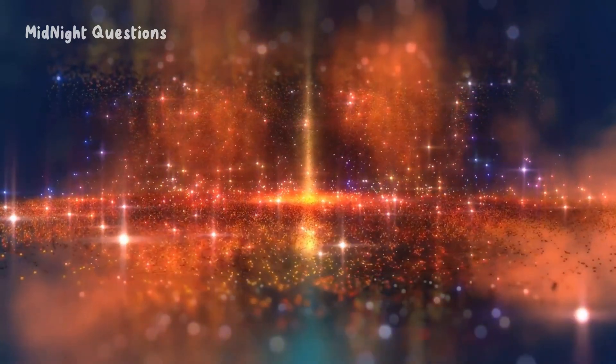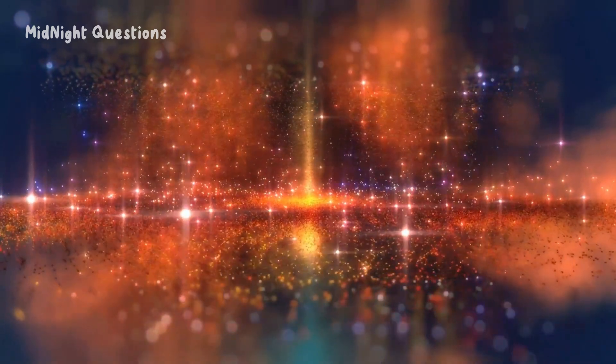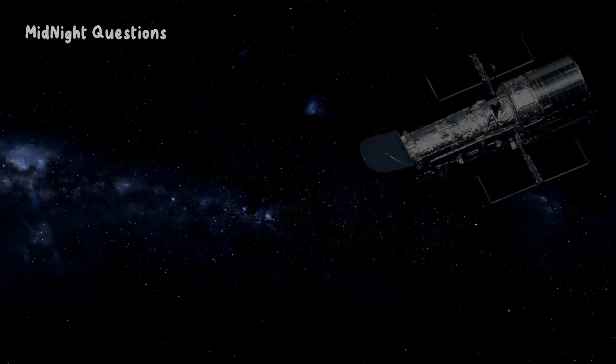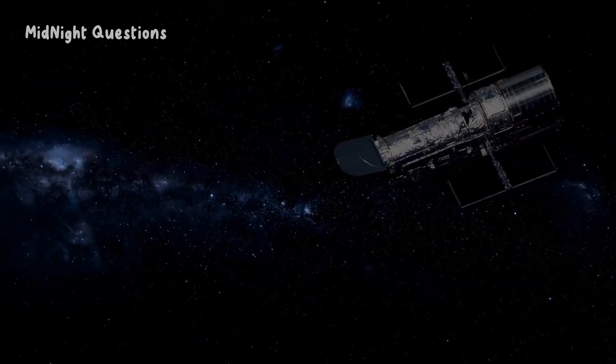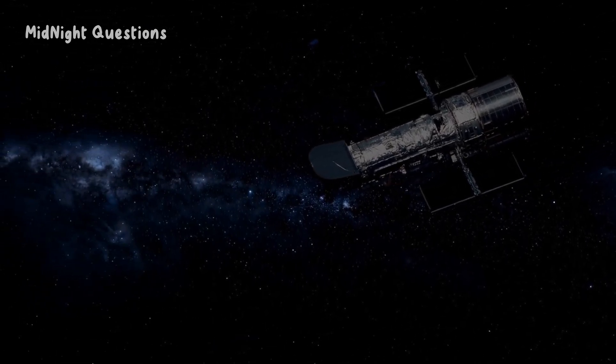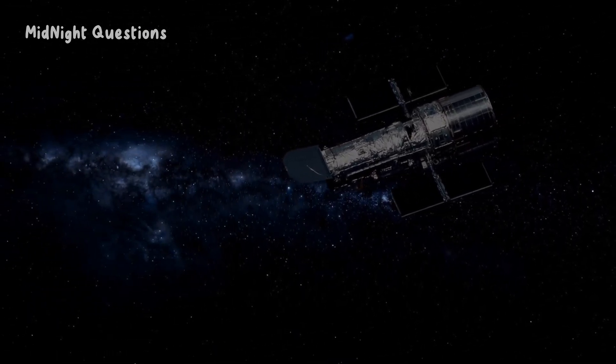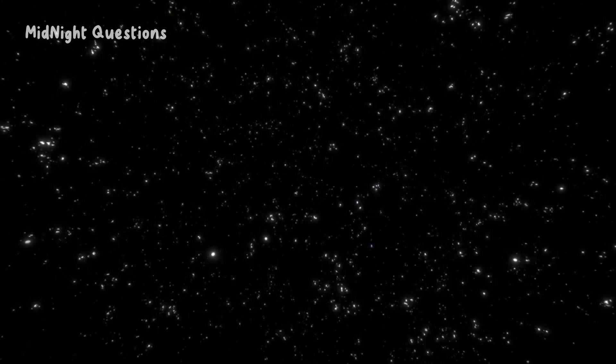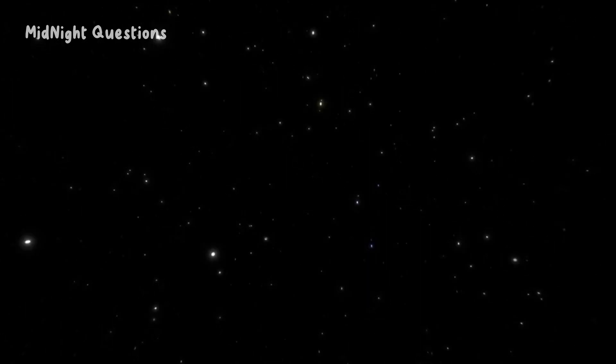The vastness of the universe can be difficult to comprehend, but there are ways to help visualize it. For instance, take a look at the Hubble Ultra Deep Field image, which is a photograph of a small area of space taken by the Hubble Space Telescope. The image contains thousands of galaxies, each containing billions of stars. This image alone shows just how massive the universe really is.